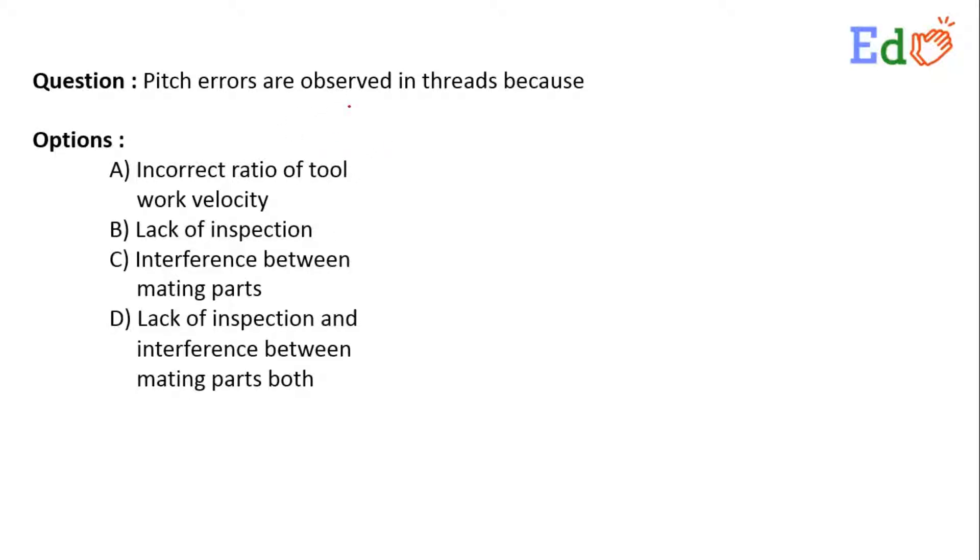The question: Pitch errors are observed in threads because? The options: A) Incorrect ratio of tool work velocity, B) Lack of inspection, C) Interference between mating parts, D) Lack of inspection and interference between mating parts both.